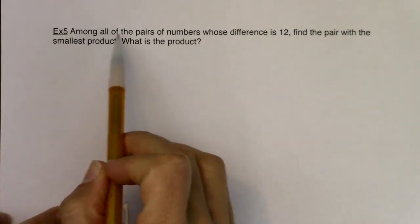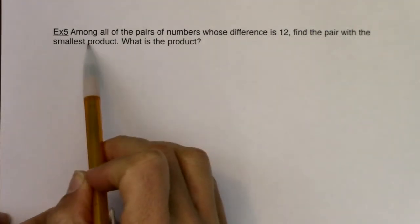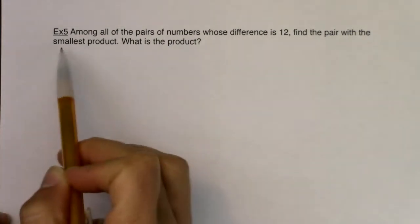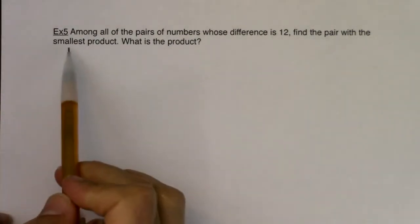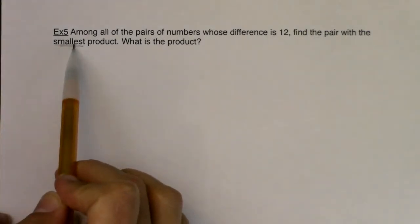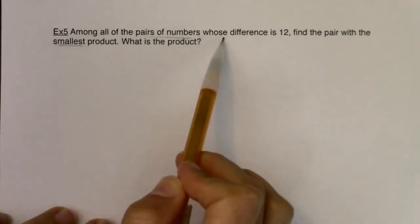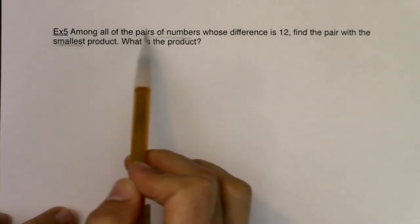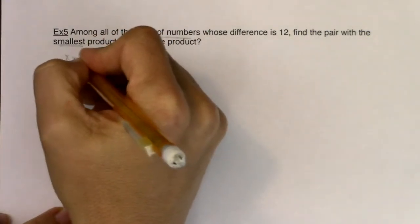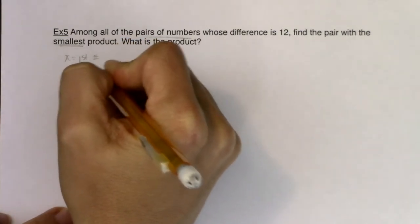So here we go, it says among all pairs of numbers whose difference is 12, find the pair with the smallest product, what is the product? So a couple of buzzwords popping out, I hope we see smallest product, right? So they want a minimum value. I also see pairs of numbers, so there's some pairs of numbers whose difference is 12. So I have two numbers that I'm dealing with, that's what a pair represents. So I have two variables. So I'm going to just label x to be my first number, and y might be my second number.